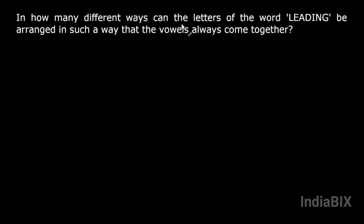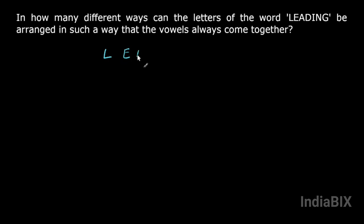In how many different ways can the letters of the word LEADING be arranged such that the vowels always come together? We have to arrange the letters of the word LEADING in such a way that all the vowels always come together. E is a vowel, A is a vowel, and I is a vowel, and they should always come together.